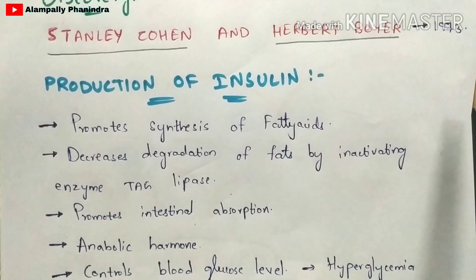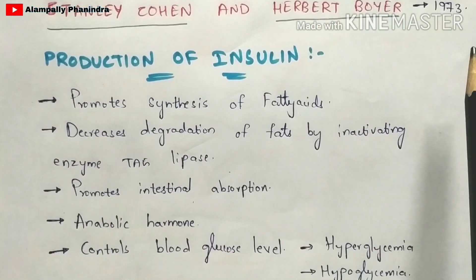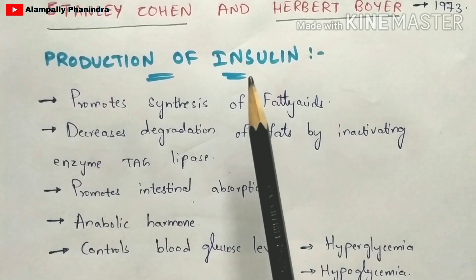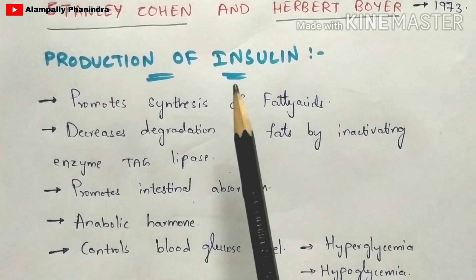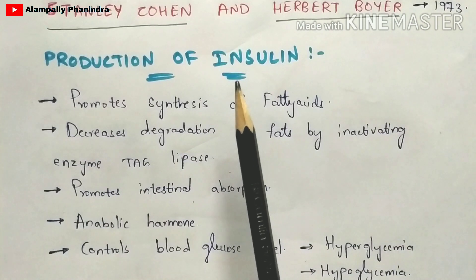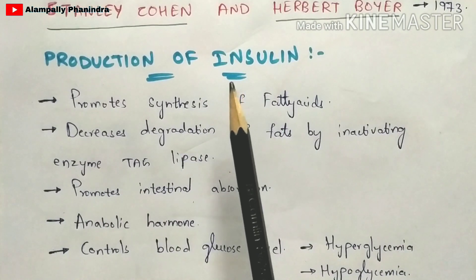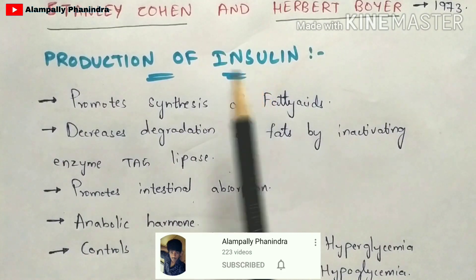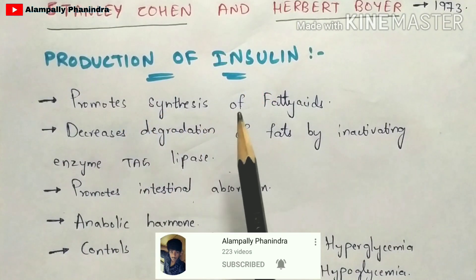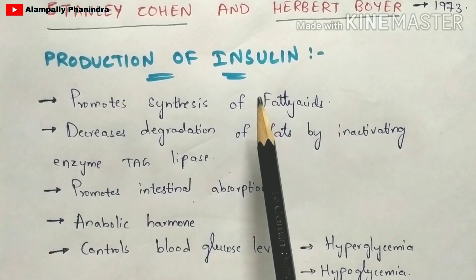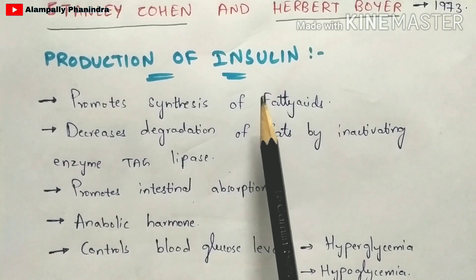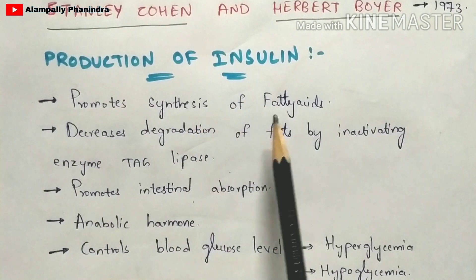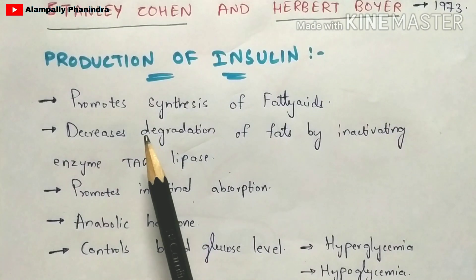What is insulin? Insulin is a hormone that mainly helps in controlling blood glucose levels — it controls sugars present in the blood. Insulin is produced by the pancreas. It also promotes the synthesis of fatty acids by activating an enzyme called acetyl-CoA carboxylase. Once acetyl-CoA carboxylase is activated, it promotes the synthesis of fatty acids.